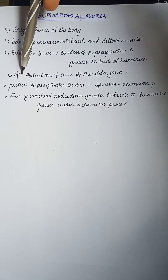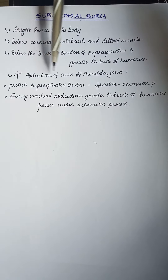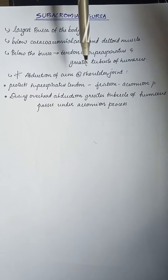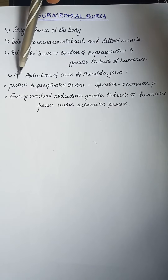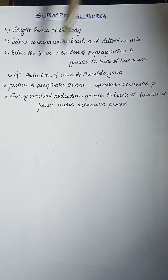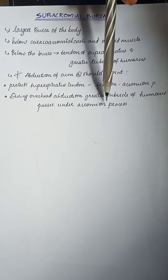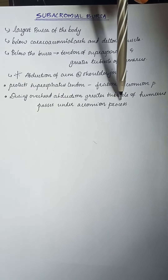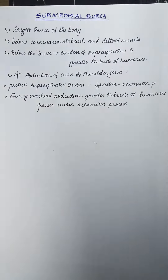This bursa is very important for the abduction of the arm at the shoulder joint because it protects the supraspinatus tendon from friction against the acromion process. During overhead abduction, the greater tubercle of the humerus passes under the acromion process, which is actually facilitated by this bursa.